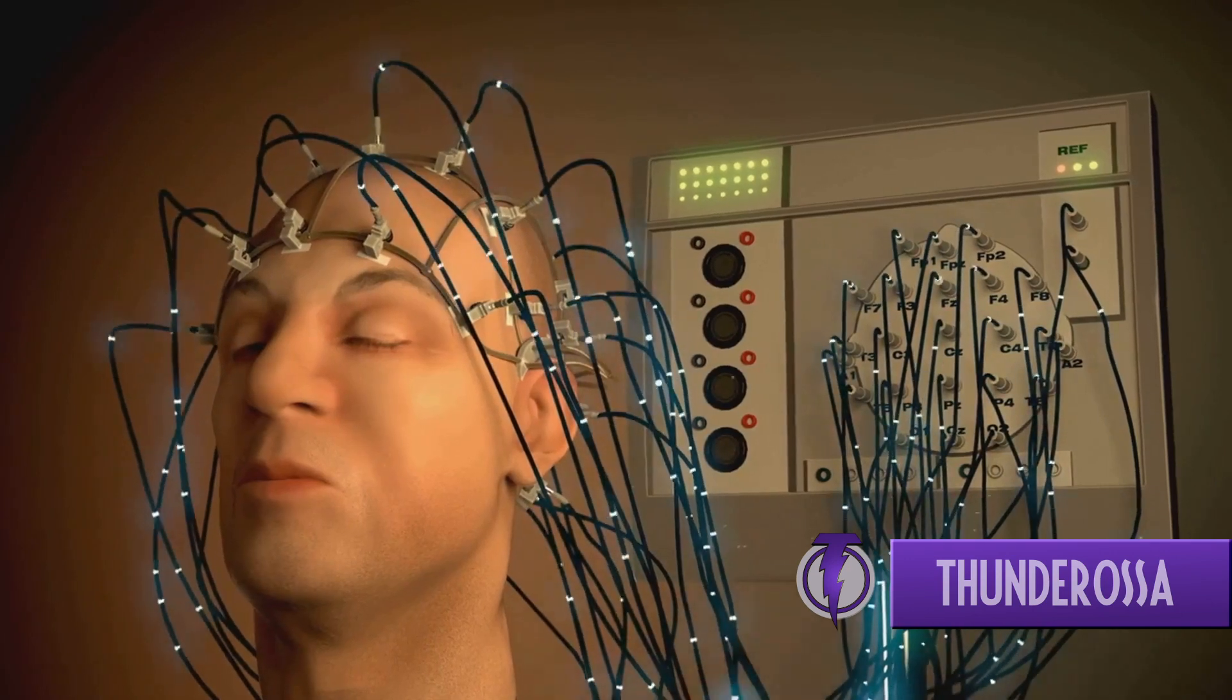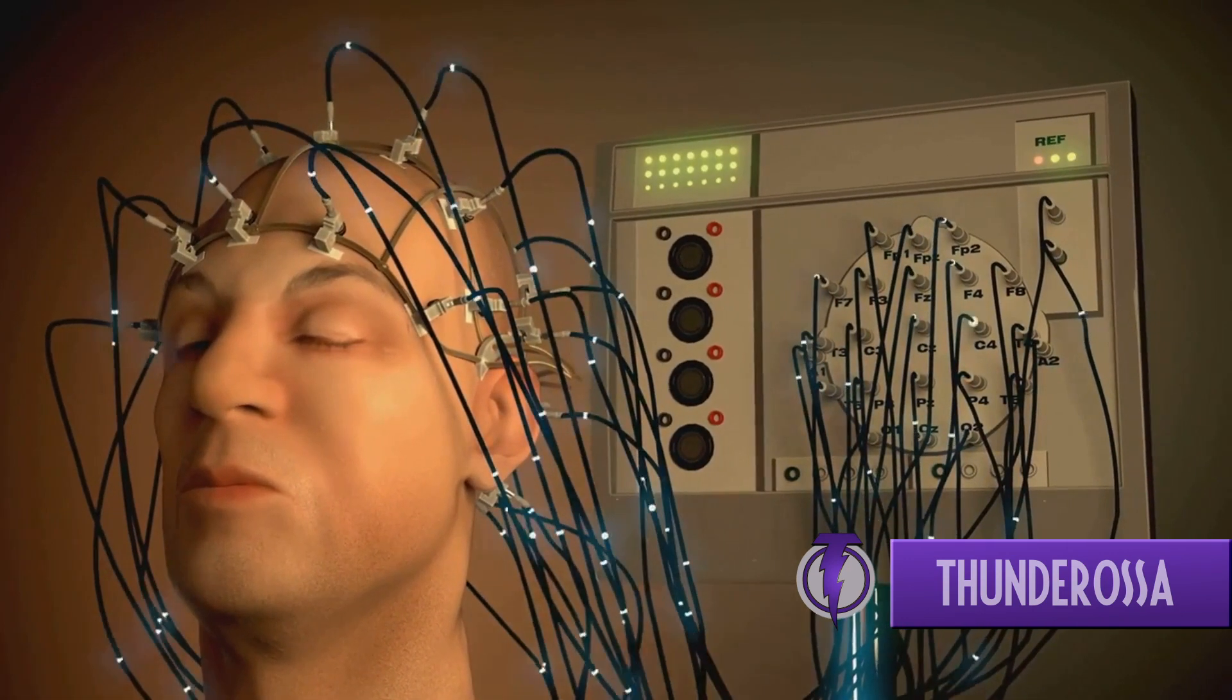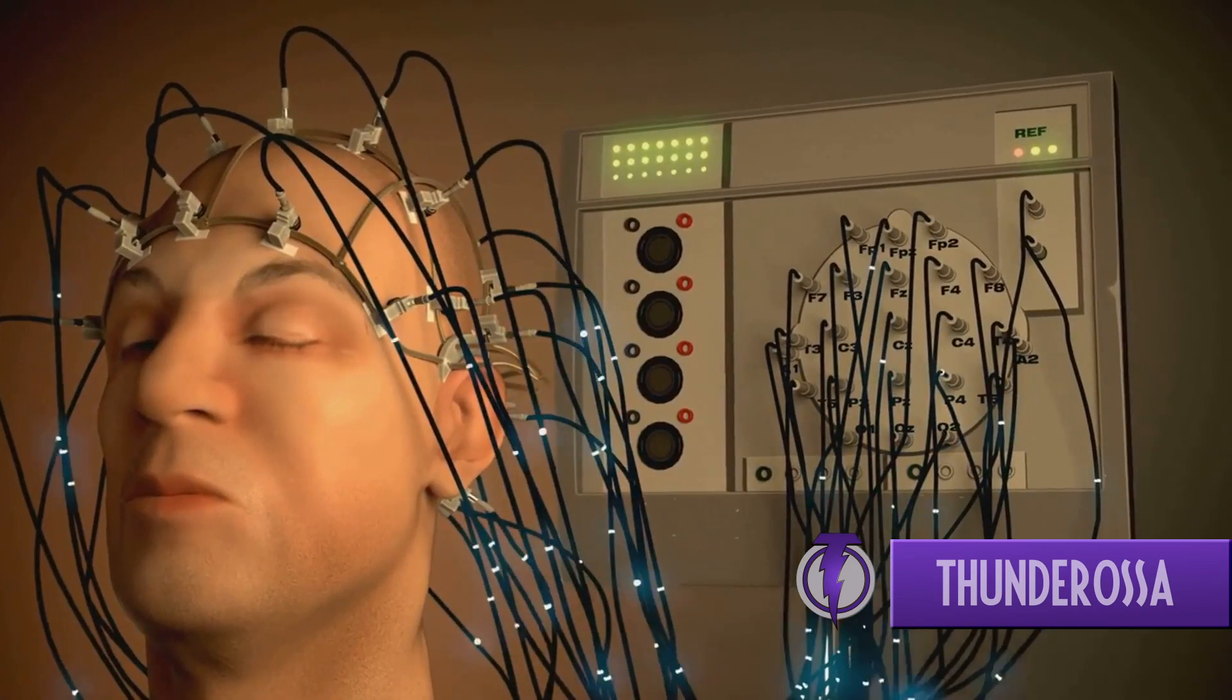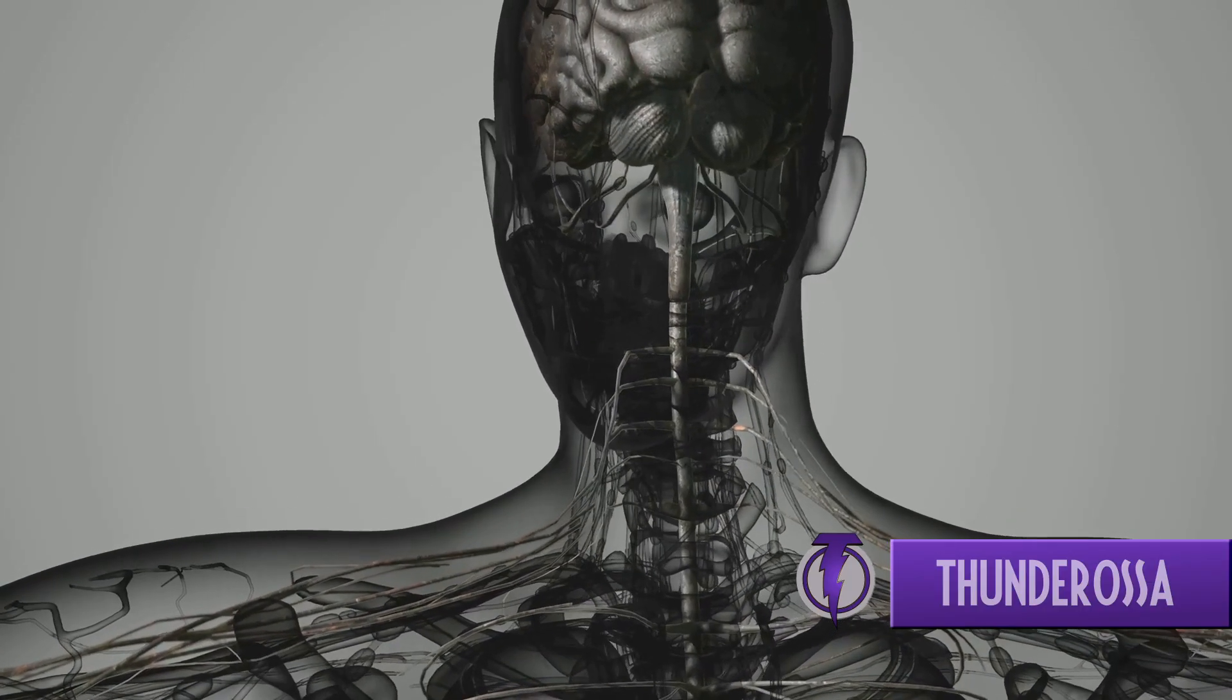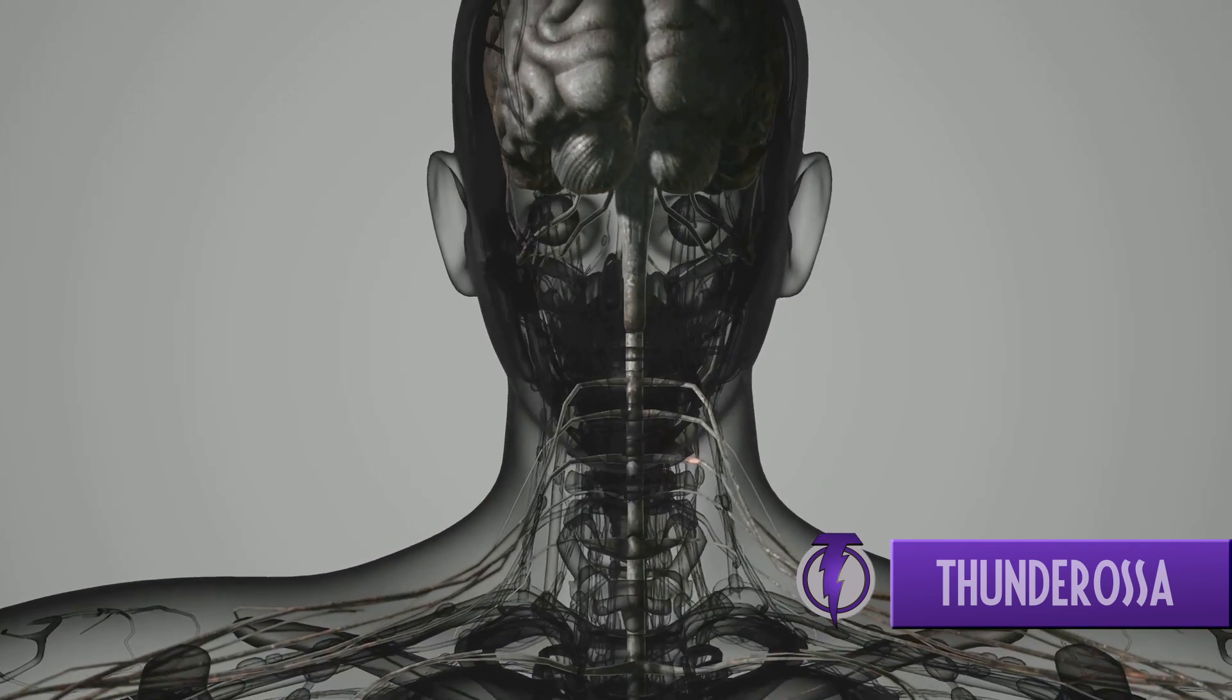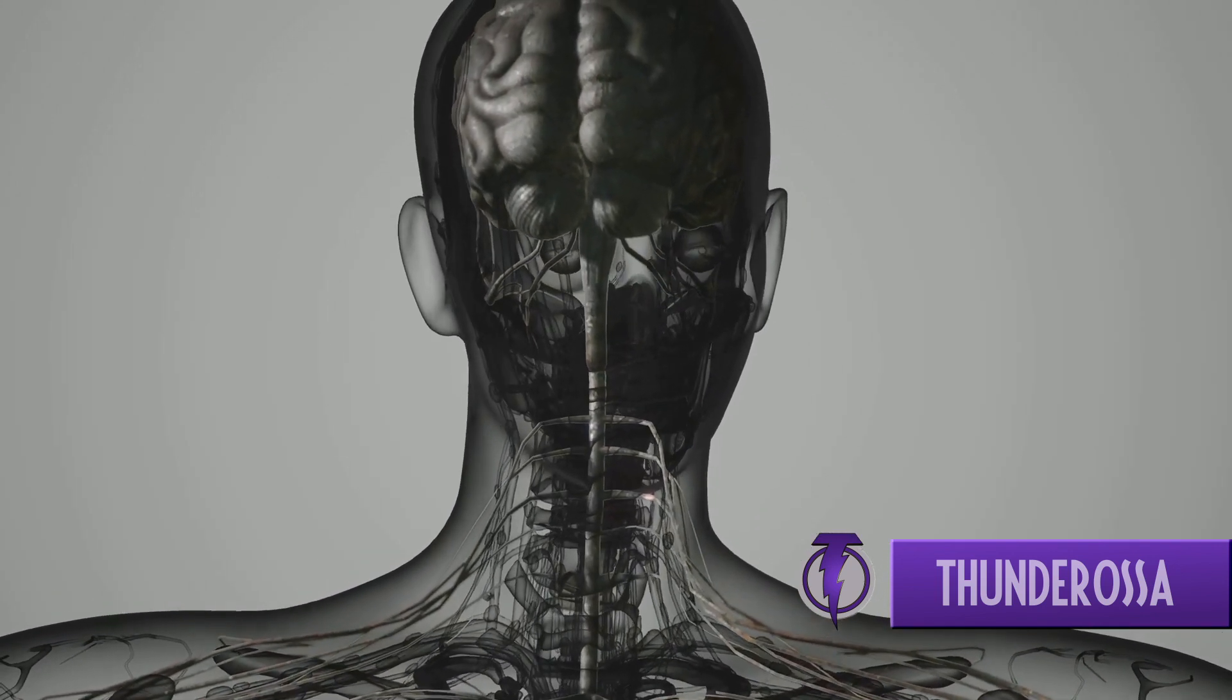The central nervous system is the command center. It comprises the brain and spinal cord, the decision makers. They interpret signals and orchestrate responses. Picture the brain as the CEO, and the spinal cord as the right-hand man, always ready to relay messages.